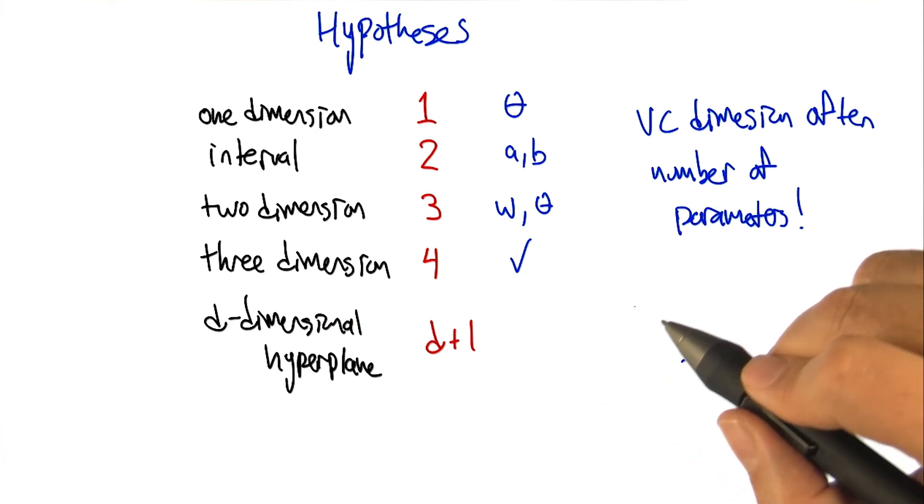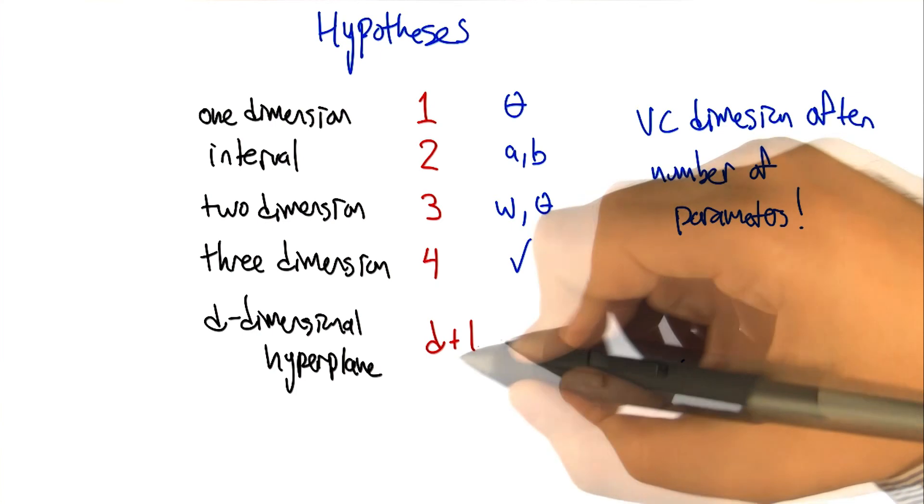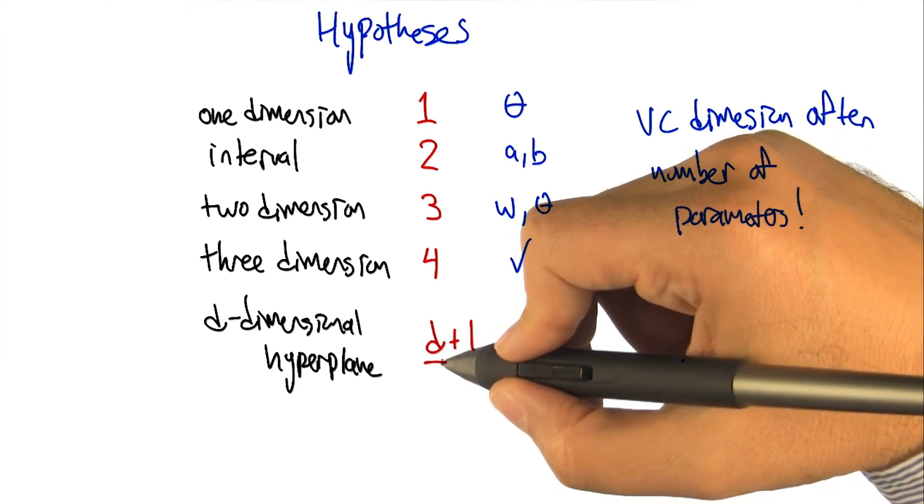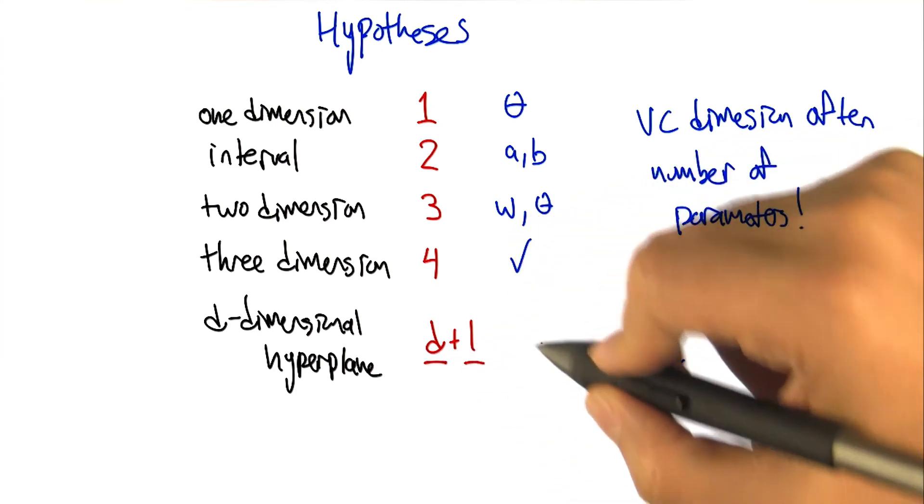Oh, I see. And that's because the number of parameters that you need to represent a d dimensional hyperplane is in fact d plus one. That's right. Yeah, d, the weights for each of the dimensions plus the theta, the greater than or equal to thing.